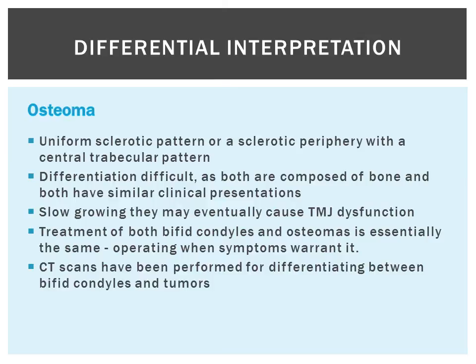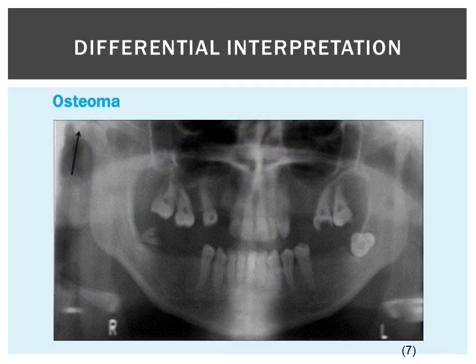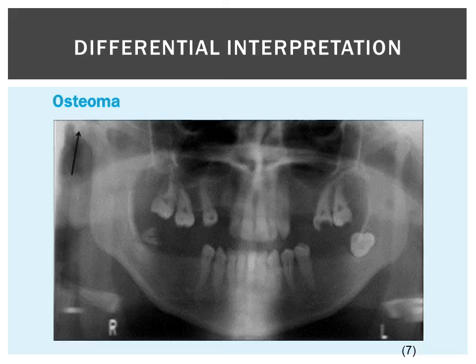CT scans have been performed to try to differentiate between bifed condyles and tumors. Here is a radiograph of an osteoma, as indicated by the arrow. As you can see, it looks very similar to a bifed condyle in this case, and if needed, a CT scan could be performed to tell the difference between an osteoma and a bifed condyle.